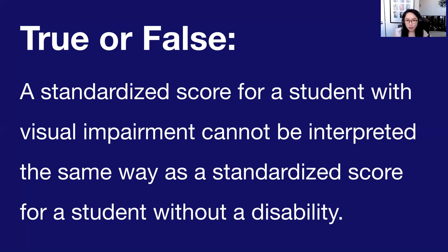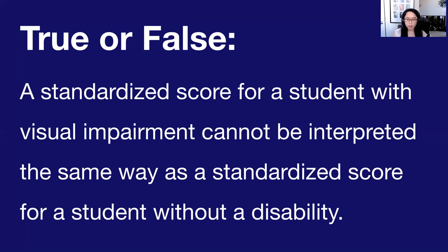This is where we lean on our TVIs and O&M specialists. I like to say that my TVI is my best friend when doing an assessment for a student with a visual impairment, because you have the knowledge of how impactful the visual impairment is — it can impact students to various degrees and in different situations. We want to set up the testing environment to be optimal for our students. Sometimes you might not get a score and may just use the information qualitatively.